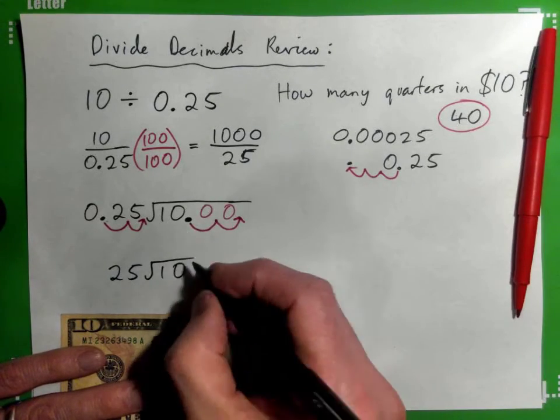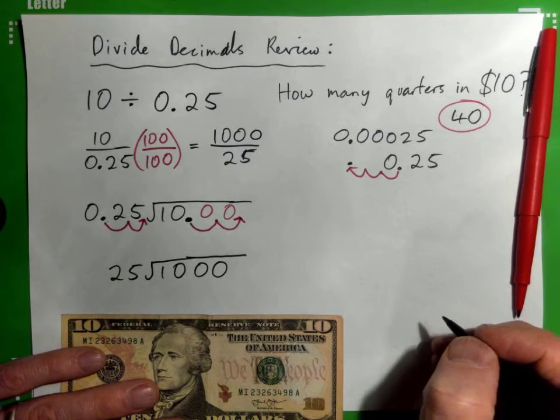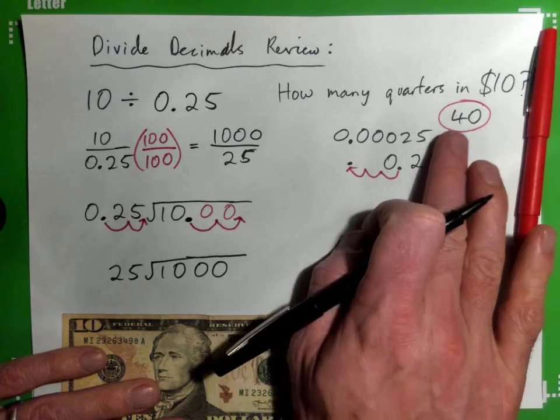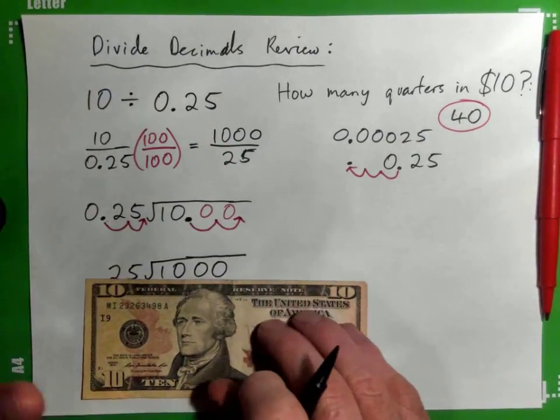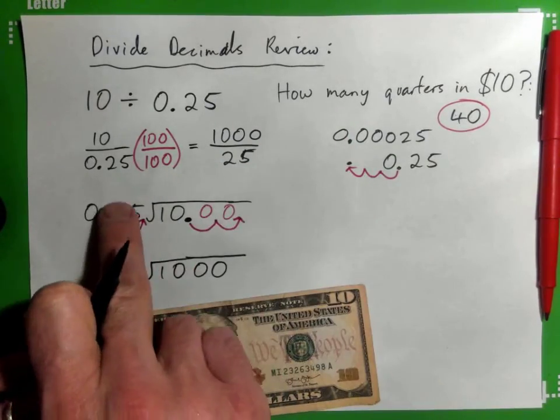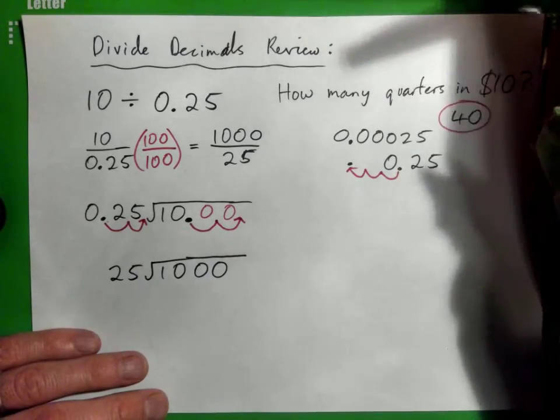Now at least we'll probably get the correct answer of 40, because we know the correct answer is 40. There's 40 quarters in $10, we all agreed on that at the beginning. But we're just doing this exercise to understand why we move the decimal points the way we do.